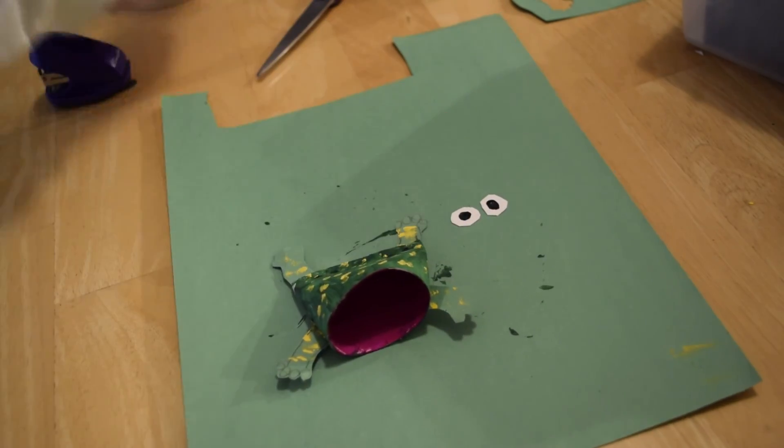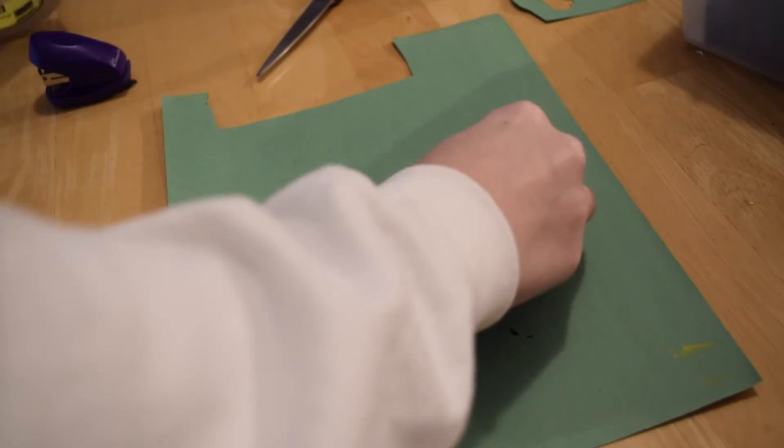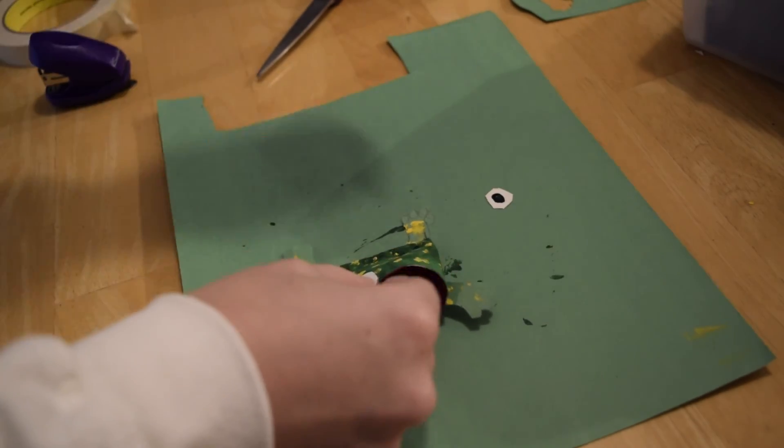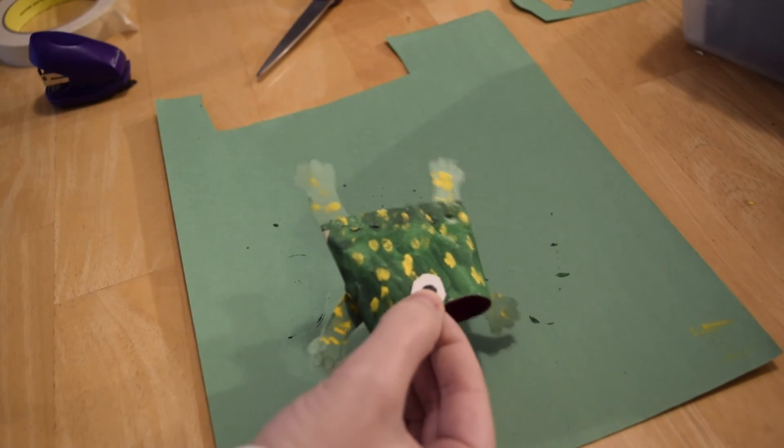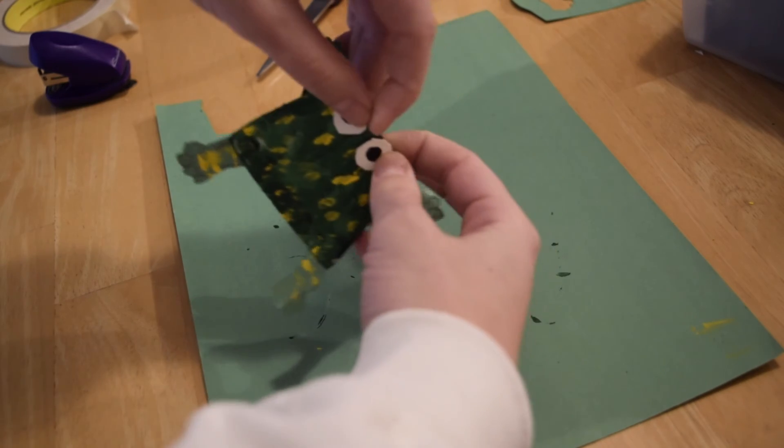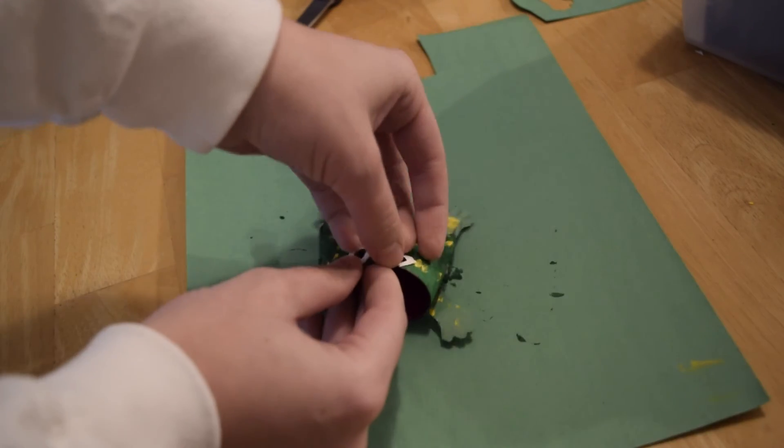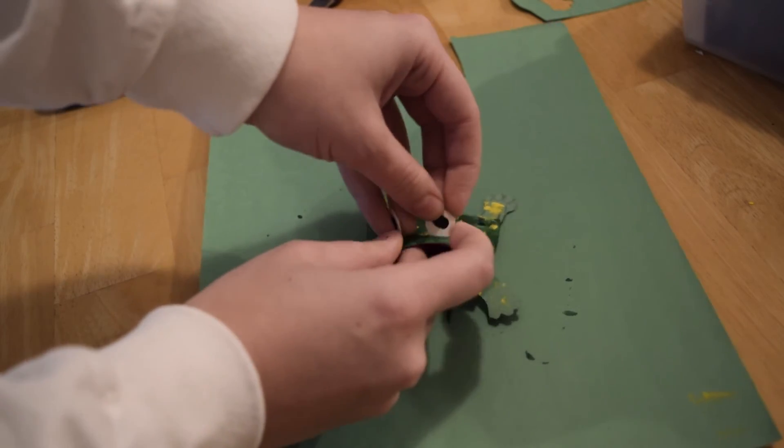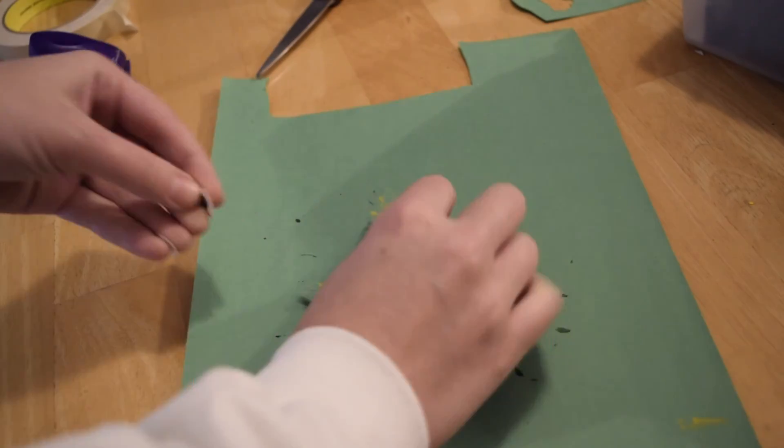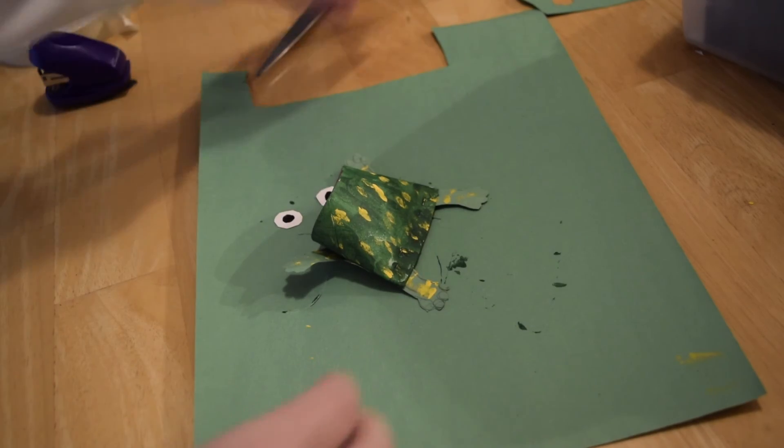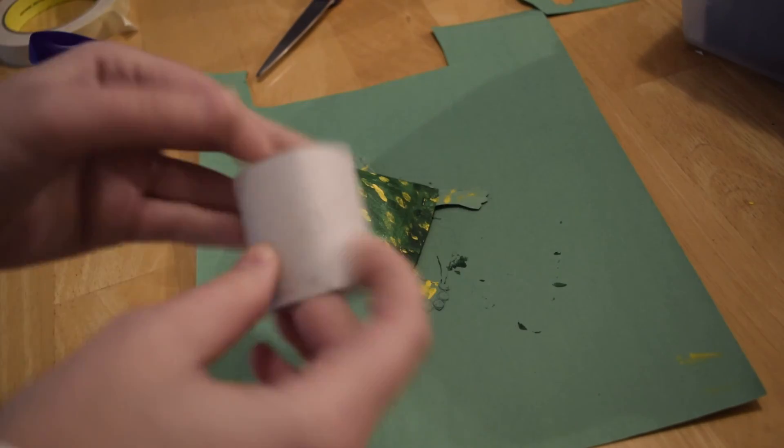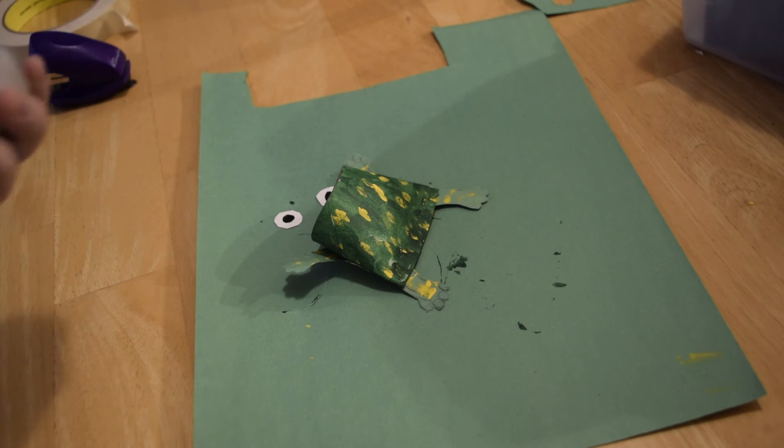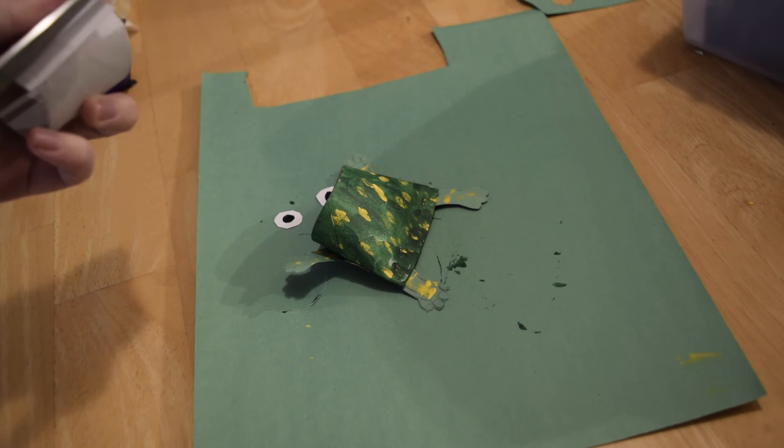All right, now the final step here is going to be getting those adorable little eyes on. So you can do this one of two ways: you can either just directly attach them onto the top of the head, or you can try and make them three-dimensional. If you try to make them 3D, I would suggest taking a little bit of your second part of your toilet paper tube and cutting a small strip that you can fold so that your eyeball sticks up.